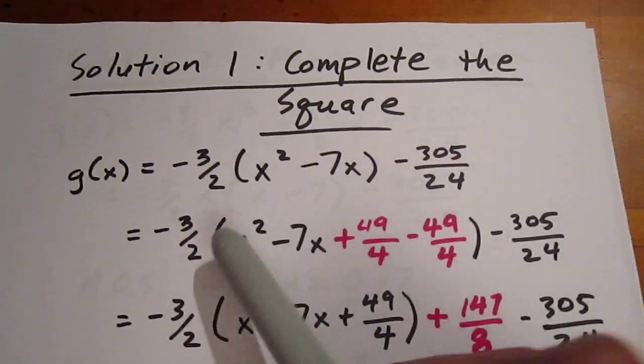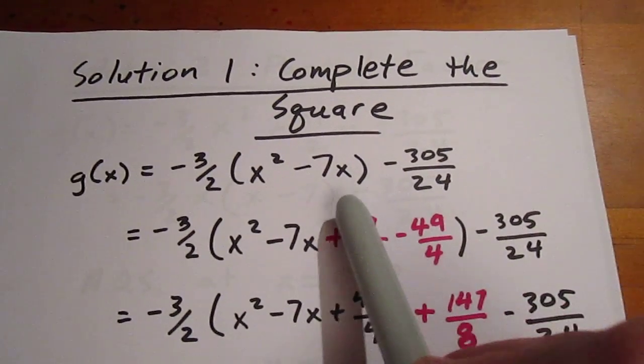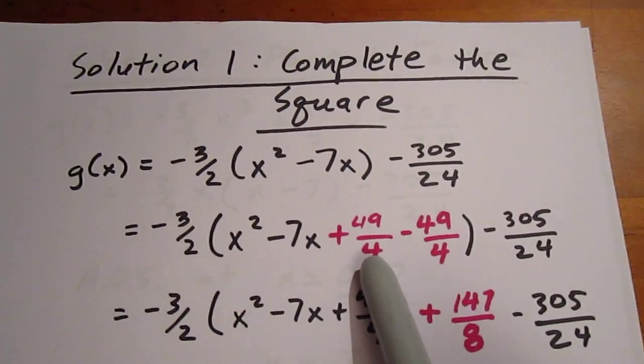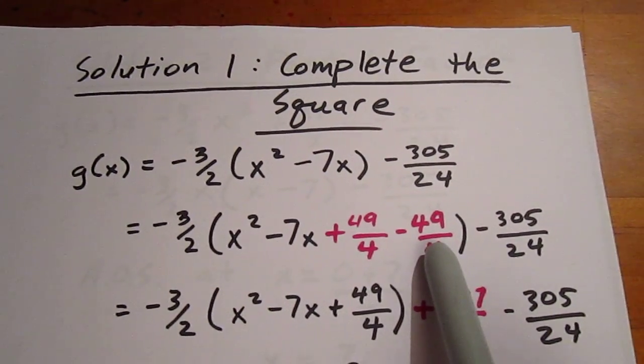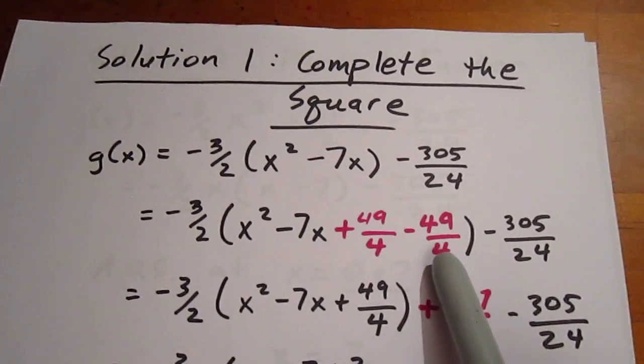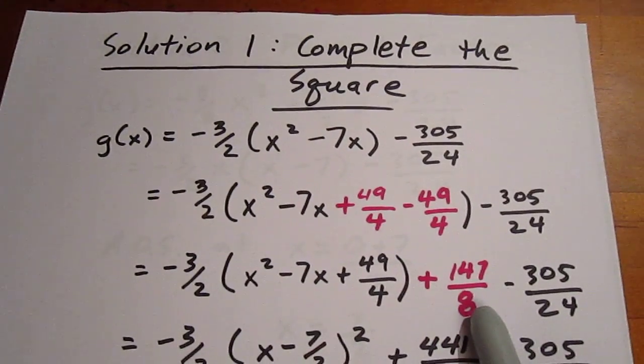If we choose to try completing the square, we factor negative 3 halves out of the first two terms. We take half of that 7, which is 7 halves, square that value and add and subtract it inside the bracket. We would then take the negative 3 halves, distribute it to the negative 49 over 4, which would give us positive 147 over 8.